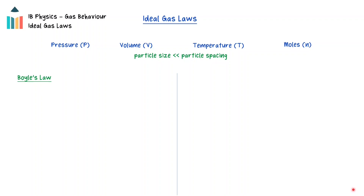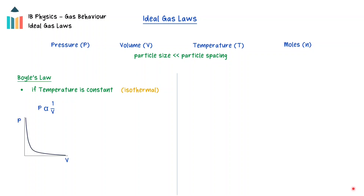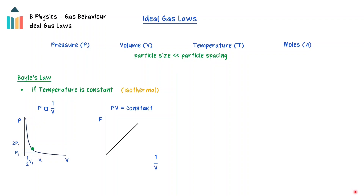Boyle's law states that under constant temperature, the pressure of a fixed mass of an ideal gas is inversely proportional to its volume. When a sample of an ideal gas undergoes a change in pressure and volume at a constant temperature, the process is called an isothermal process. On a graph of pressure versus volume for an isothermal process, the resulting inverse curves are known as isotherms. As the pressure on the gas increases, the volume decreases — a doubling of the pressure, for example, will result in the volume reducing to one half of its original value. This relationship can also be expressed as the pressure times the volume is equal to a constant. A graph of pressure against the inverse of the volume will give a straight line that passes through the origin.